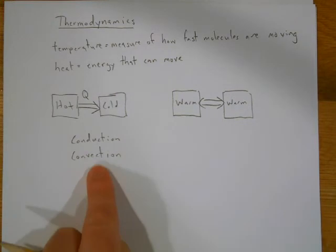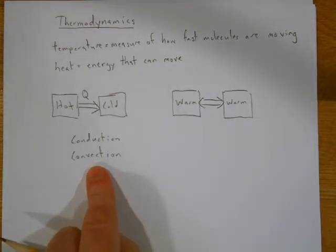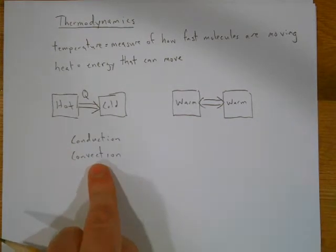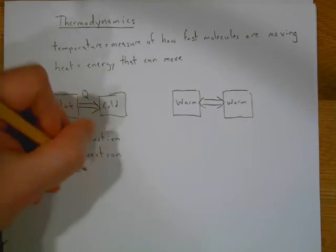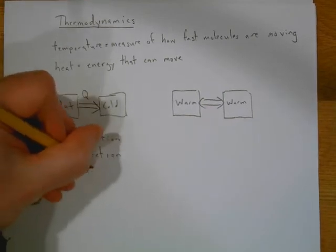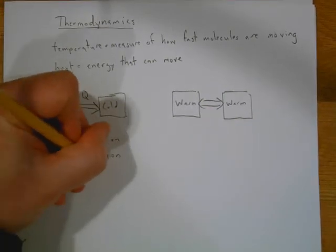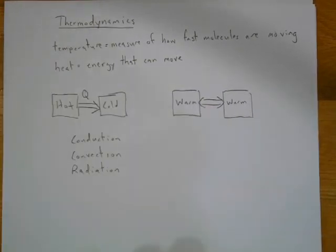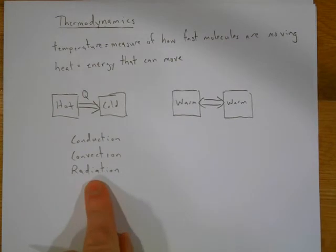Convection — like a convection oven — uses a fluid (in a convection oven, that fluid is air) to move the heat. So convection requires a fluid to transfer heat.